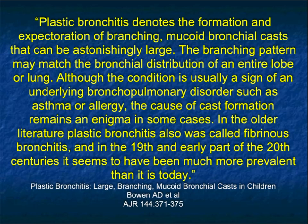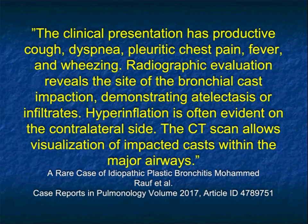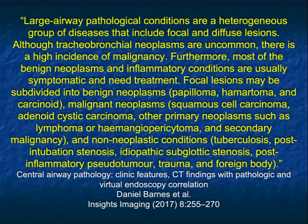Plastic bronchitis denotes the formation and expectoration of branching mucoid bronchial casts that can be astonishingly large. The branching pattern may match the bronchial distribution of an entire lobe or lung, although the condition is usually a sign of an underlying bronchopulmonary disorder such as asthma or allergy. The cause of cast formation remains an enigma in some cases. Clinical presentation includes cough, dyspnea, chest pain, fever, and wheezing. Radiologic evaluation reveals the site of bronchial cast impaction, demonstrating atelectasis or infiltrate. Hyperinflation is also evident on the contralateral side. CT is terrific in these cases, allowing visualization of the cast within the major airway.